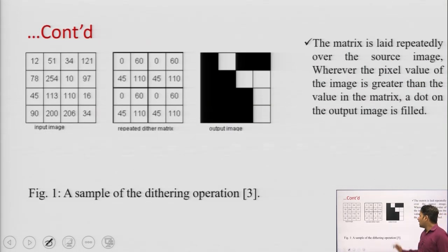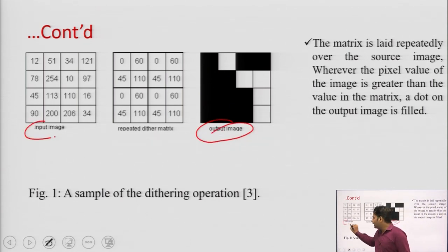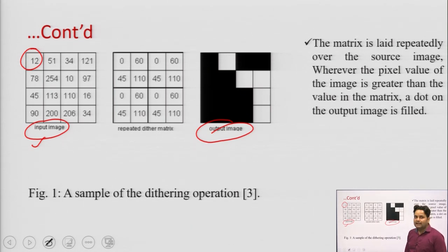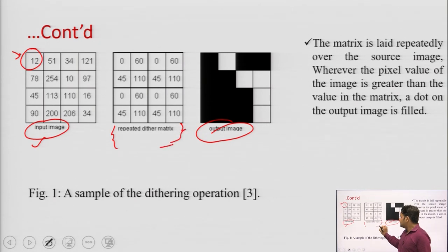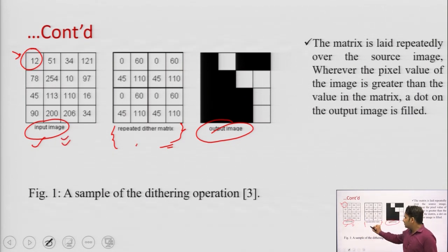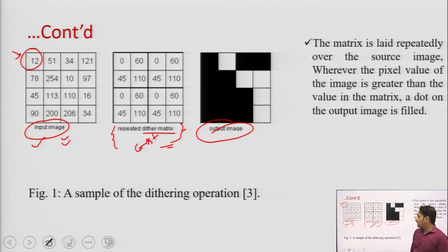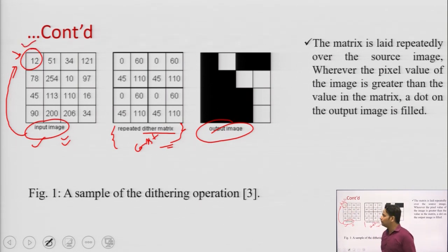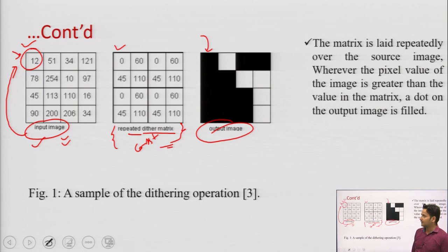To find the output image: this is the output image and this is the input image — the digital image where each and every pixel has an intensity value. The first pixel has the value 12, and the repeated dithering matrix, which is used for the digital halftoning process, is compared with this input image. The dithering matrix is constant, and you have to use it repeatedly. If your input image has a pixel with a higher value than the corresponding dithering matrix entry, it will generate a black portion. For example, 12 is higher than 0, so it generates a black portion.